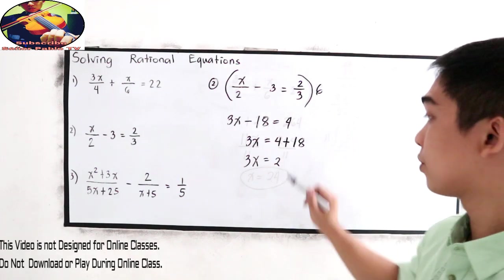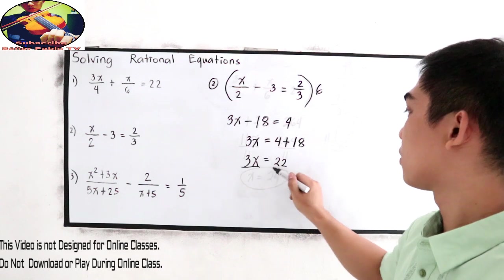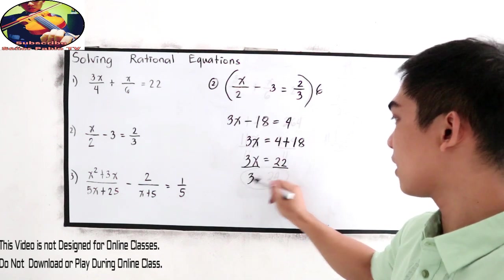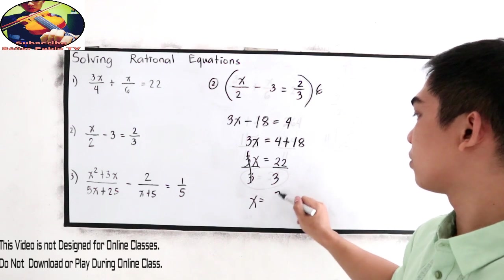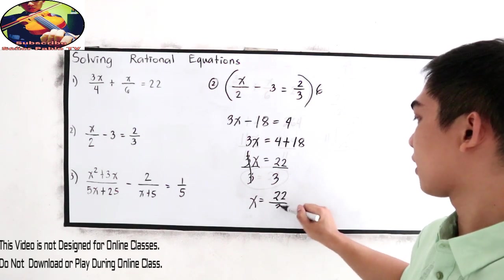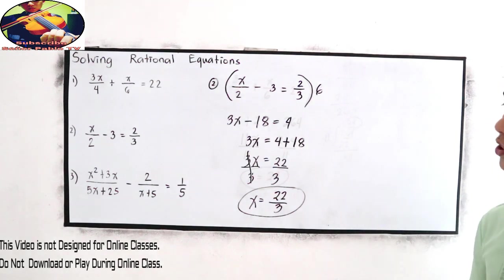So 3x is equal to 4 plus 18, that is 22. So we are going to divide by 3. So x is equal to 22 over 3. It's a fraction.